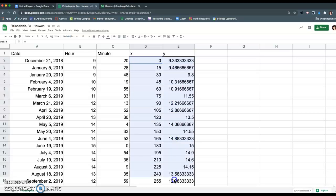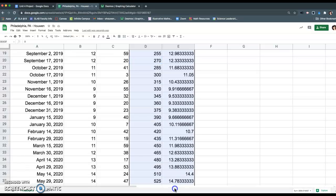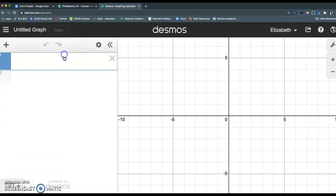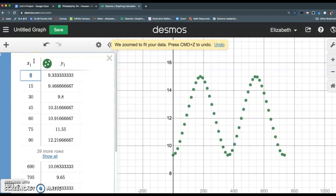You're going to highlight this table of values, and then whatever you do to copy on your computer—I used Command C—and then just click into this first line here and Command V to paste. Notice it tells you we zoomed to fit your data.